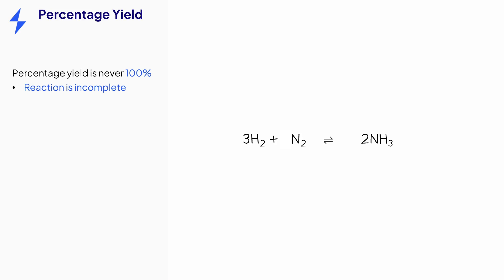A reaction may not go to completion. For example, if it is a reversible reaction, and the products are continually turning back into the reactants.